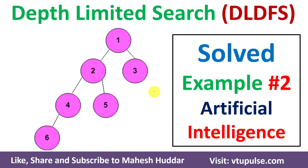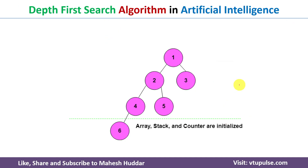Welcome back. In this video I will discuss the depth-limited search algorithm in artificial intelligence with the help of a simple solved example. This is solved example number two; the link for other examples is given in the description below. Depth-limited search algorithm is a modified version of depth-first search algorithm, so first we will understand how to apply depth-first search algorithm on a given tree.